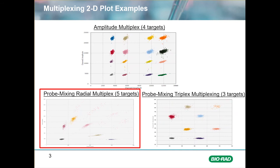Here are three examples of ddPCR multiplexing strategies and how the clusters might appear on the 2D plot. At the top is an amplitude multiplex with four assays, a probe mixing triplex on the bottom right, and on the bottom left a probe mixing radial multiplex showing a fiveplex. More clusters can be added for further multiplexing. Today we will explore the probe mixing radial multiplexing strategy.